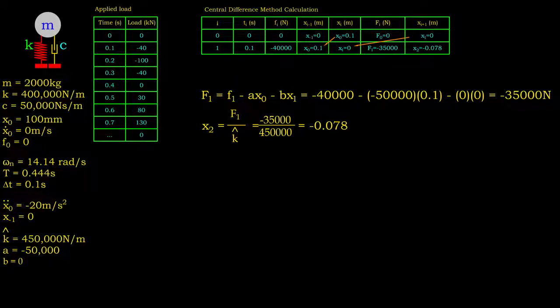Moving on to T1, again the force is obtained from the loading data. For xi-1 column, the value of xi at the preceding instance should be used. Similarly, the value of xi column equals to that in xi-1 column at preceding instance. The load vector and next instance response should be calculated using the same formula.